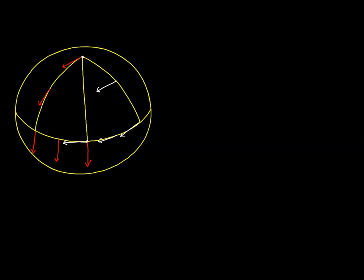Let's do it one more time, and this time let's just go down this line of longitude. This is another geodesic. Since this vector forms a 45-degree angle with this path, it will remain at a 45-degree angle all the way down the transport, and eventually winds up at a 45-degree angle to our reference point right down here.